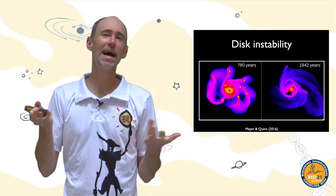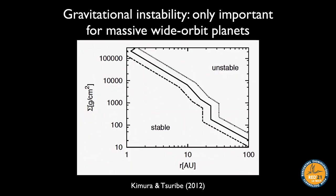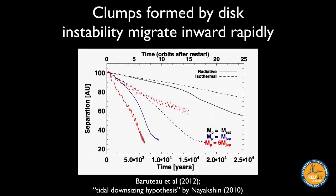Does disk instability really happen? According to models, yes — for very massive disks, and in the outer parts of those disks where instability may occur given sufficient mass. What remains unclear is whether planets formed this way would stay there. Some studies suggest that even if clumps form in the outer disk, you already have a lot of gas mass out there, which drives faster migration, so it's quite plausible that most of the time a clump forms it migrates inward quickly.